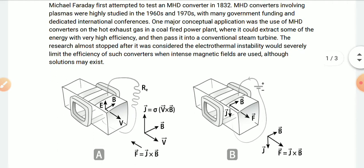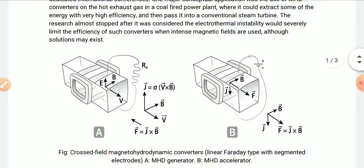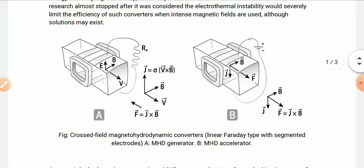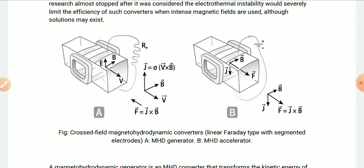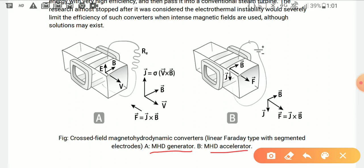The research almost stopped after it was considered that electrothermal instability would severely limit the efficiency of such converters when intense magnetic fields are used, although solutions may exist. We have talked about two types of MHD: one is the MHD generator and another is the MHD accelerator. Figure A is for the MHD generator, and figure B is for the MHD accelerator. For the MHD generator, energy can be extracted due to the ionized fluid.